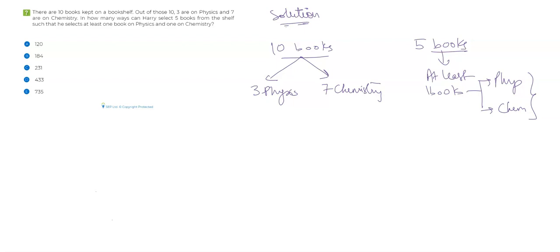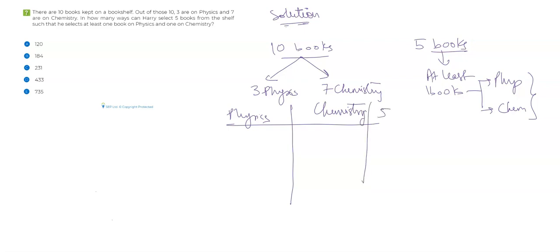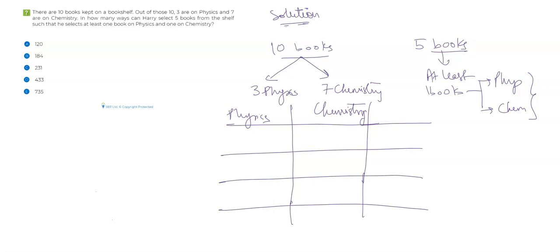Whenever you have a question where an 'at least' or 'at most' condition is given, it is best that you write down the events first. So when I'm choosing five books, what are the different ways? Let me write down physics and chemistry separately. The sum should be five. One way is that I take one physics and four chemistry books. The other way is two physics and three chemistry. Another way could be three physics and two chemistry. I cannot choose four physics books because I only have three physics books. So the possible splits are these three.